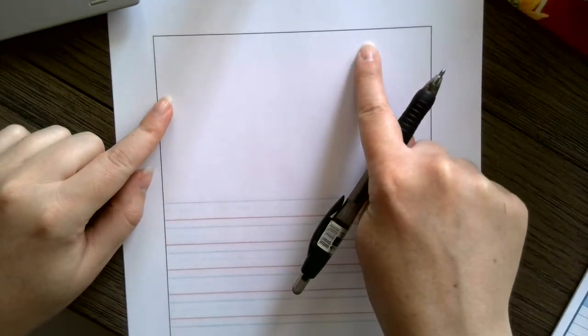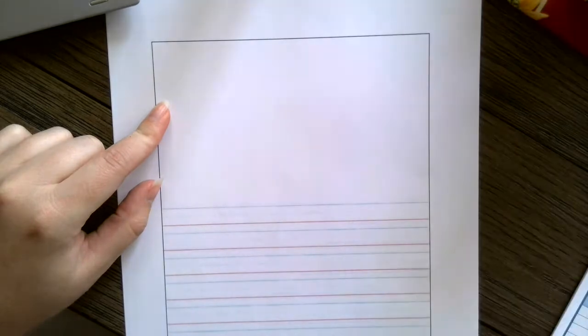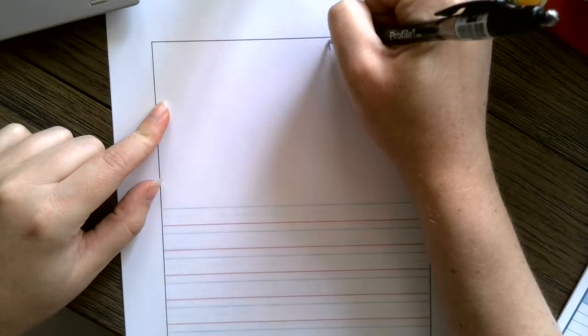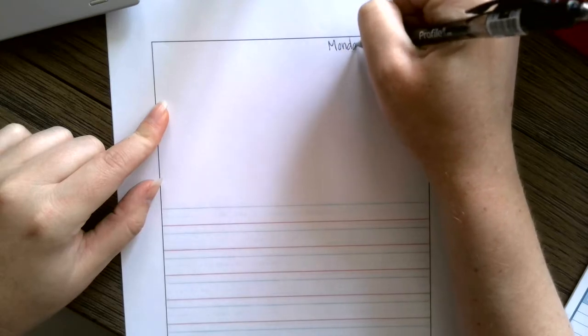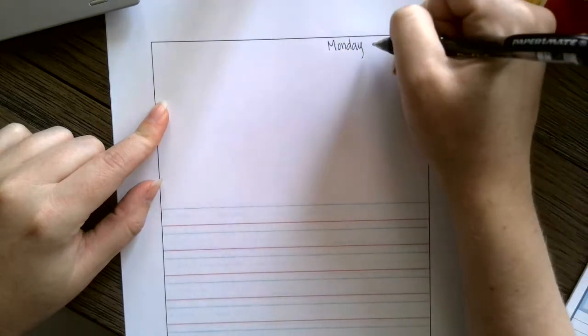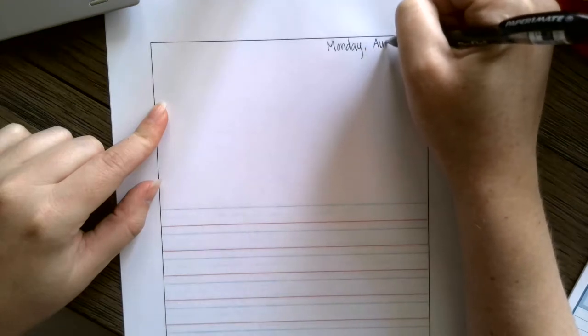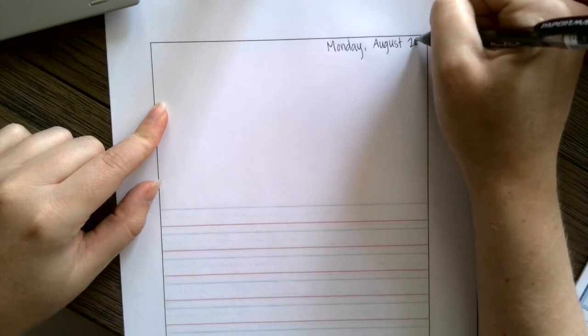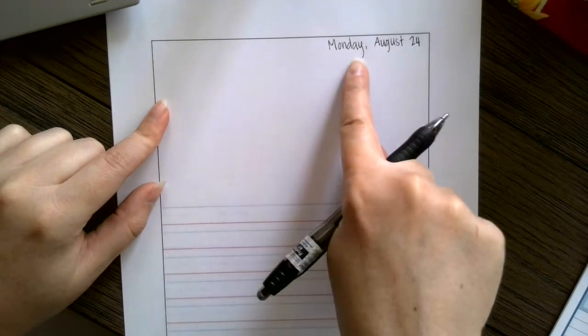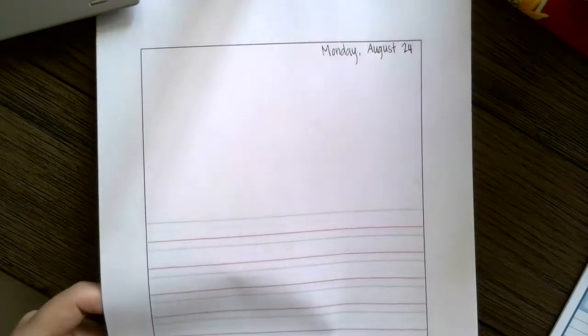You will come to the very top of the page and you will write the date. So today is Monday, August 24th. Okay, so you will practice writing the date at the top of each of your journal pages.